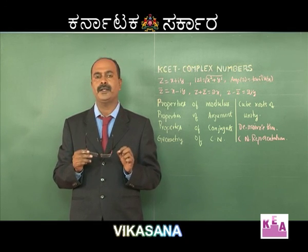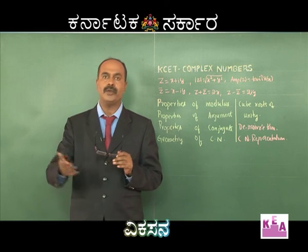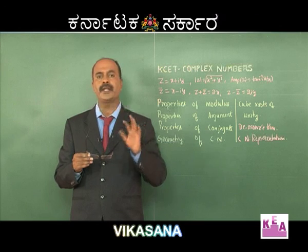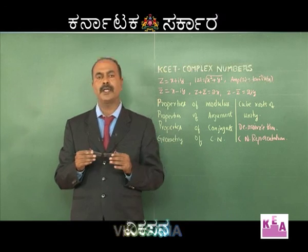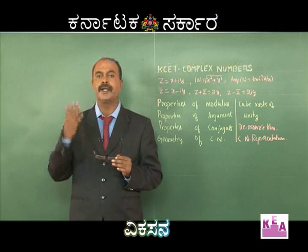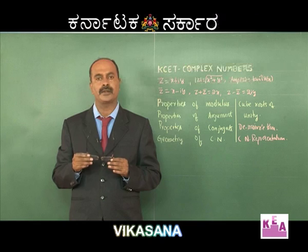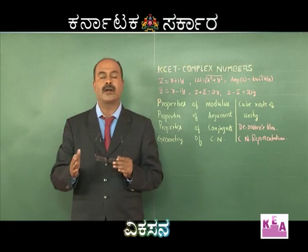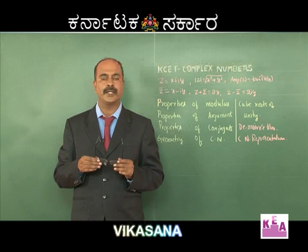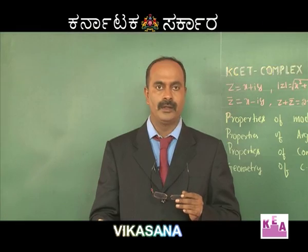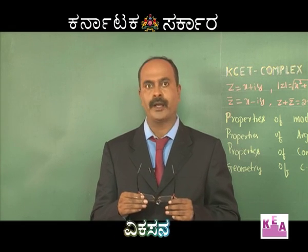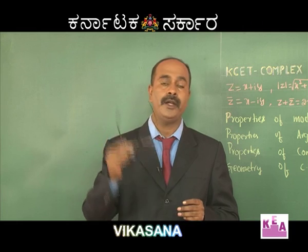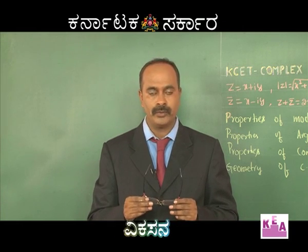Coming to the very important part — roots of unity. Square roots of unity are 1 and −1. Cube roots of unity are 1, ω, and ω². If the cube root of 1 is x, then x³ = 1, so x³ − 1 = 0, giving (x−1)(x²+x+1) = 0. The real root is x = 1. The complex roots are x = (−1 + i√3)/2 and x = (−1 − i√3)/2, which are ω and ω². Also, 1·ω·ω² = ω³ = 1, and 1 + ω + ω² = 0.